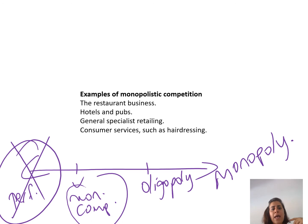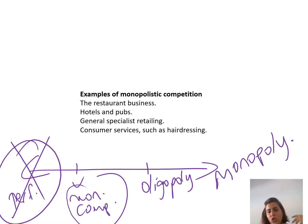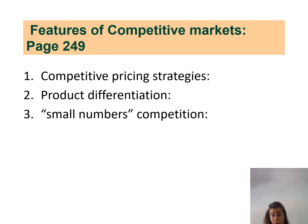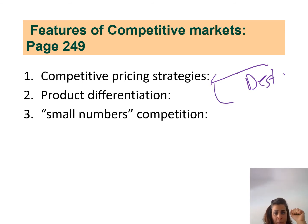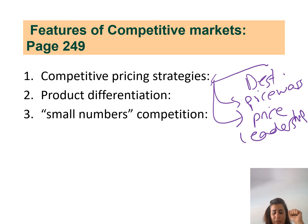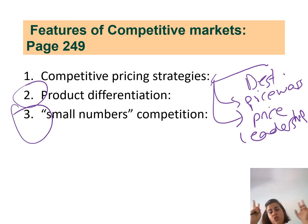Monopolistic competition examples include restaurants, hotels, department stores selling clothes, and hairdressers — these are consumer services. On page 249, under features of competitive markets, firms compete in three different ways that we will discuss from pages 250 and 251. The three strategies are: competitive pricing strategies — including predatory pricing, price wars, and price leadership — product differentiation, and finally, competition among a small number of firms.